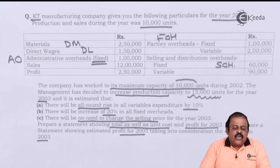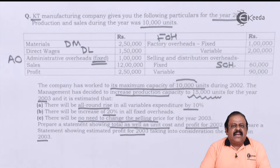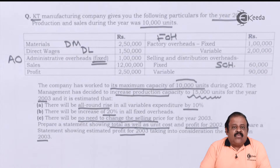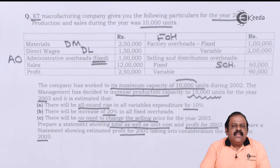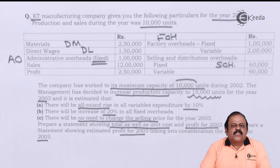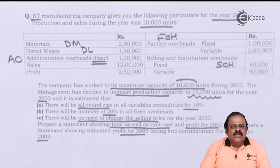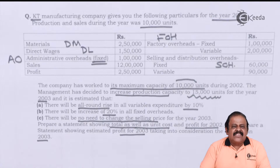Even with zero output you still have to pay office rent. As you increase production, office rent will not increase — it remains the same. That is called fixed cost, fixed for a particular period. Variable overheads, on the other hand, come into picture as you decide to produce. For example, material — if we don't produce, we won't require material at all. If you produce more, you require more material; if you reduce production, less material is required. Fixed expenses include items like rent or depreciation.